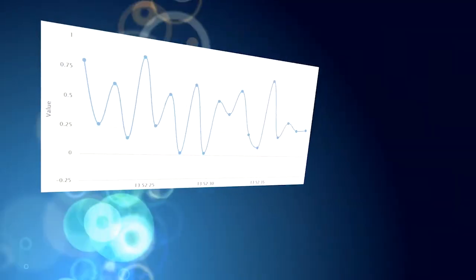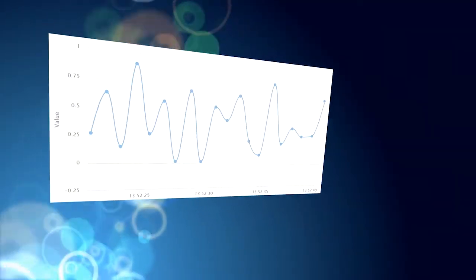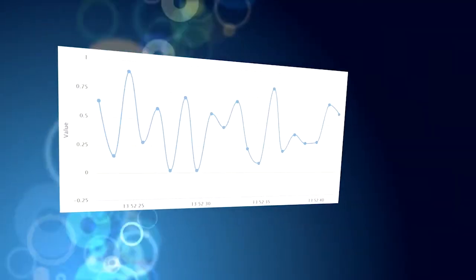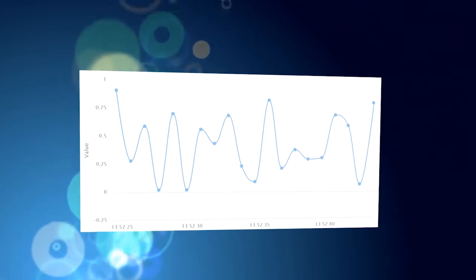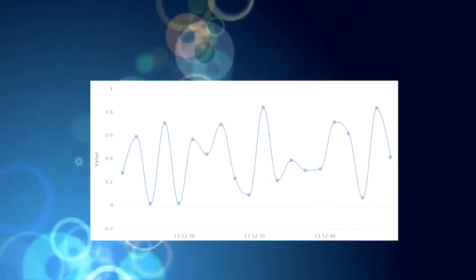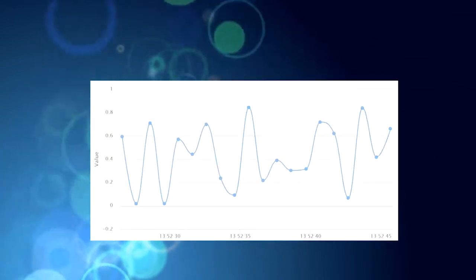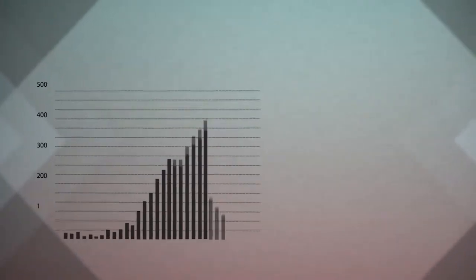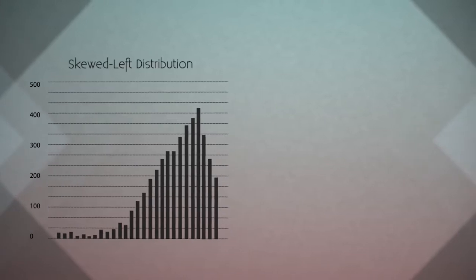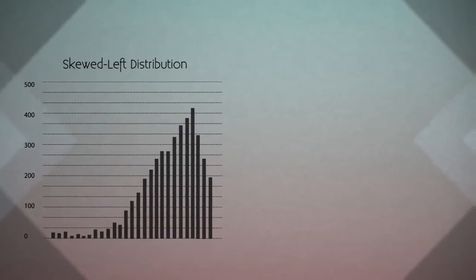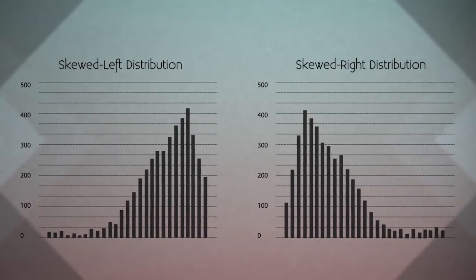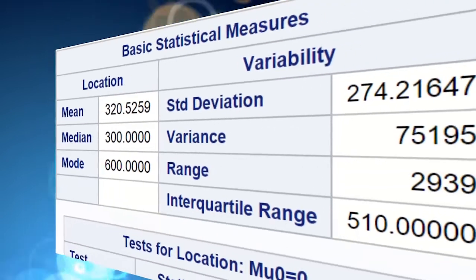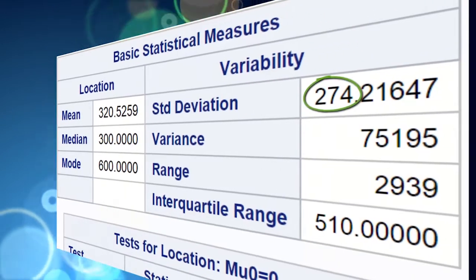So far in our discussions of graphing, we've considered data obtained from one variable, either categorical or quantitative, and we've learned how to describe the distribution of that single variable using the appropriate visual displays, as well as numerical measures of center and spread.